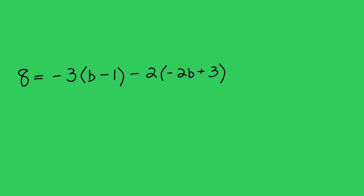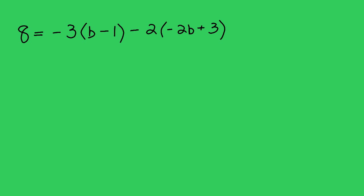On to the last problem. Now with this one, we again need to simplify both sides of the equation first. But the left side is already taken care of. 8 is pretty simple. So we need on the right side, what we need to do is distribute and then combine like terms. So we'll get 8 equals negative 3b plus 3, negative 2 times negative 2b equals positive 4b, and negative 2 times 3 equals negative 6. Now combine like terms. Negative 3b and 4b gives us b, and then 3 and negative 6 gives us minus 3.